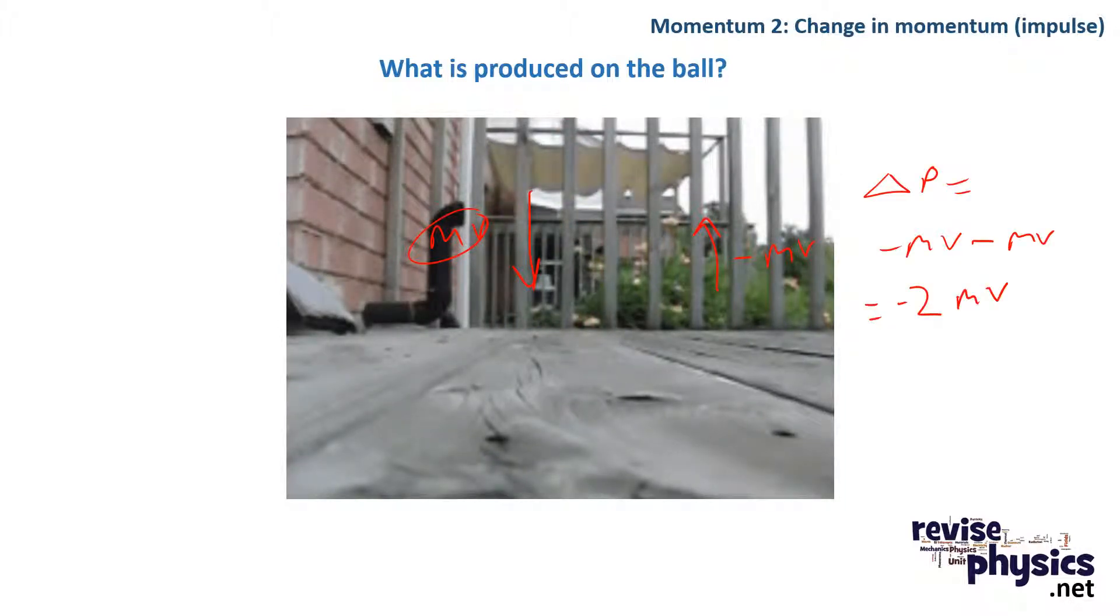That means that the change in momentum is minus mv minus mv, the initial momentum. So it experiences an overall change momentum of minus mv of minus mv, and that produces a force which squashes the ball.